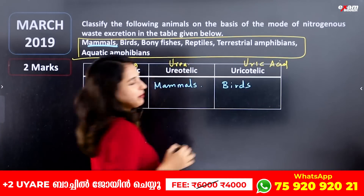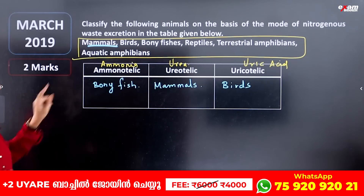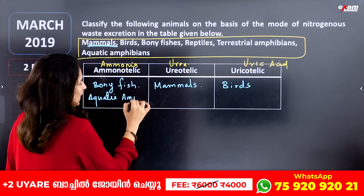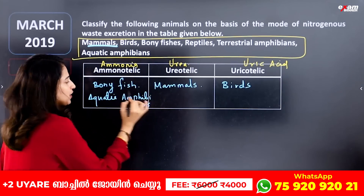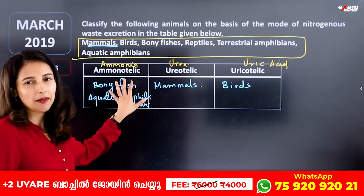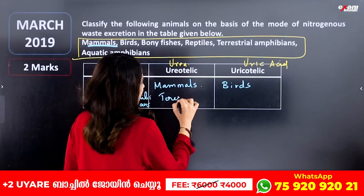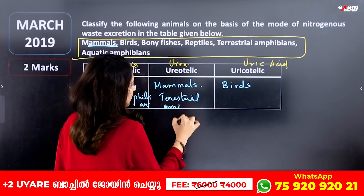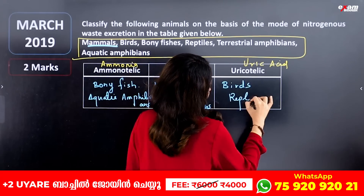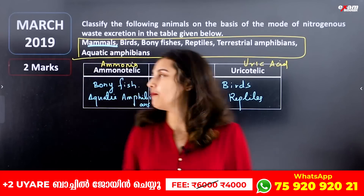Birds are Uricotelic because they have minimal water. Aquatic amphibians are Ammonotelic because ammonia is highly toxic and needs to be diluted with plenty of water. Terrestrial amphibians are Uriotelic. Reptiles are Uricotelic. If we successfully complete this table, we can get two to three marks.